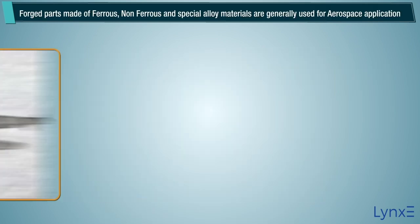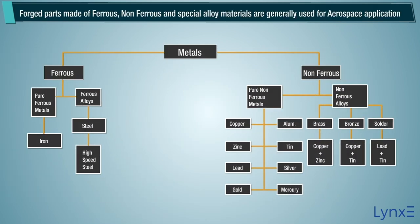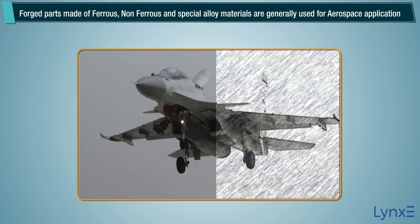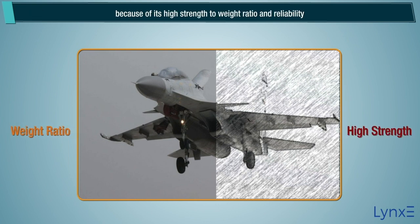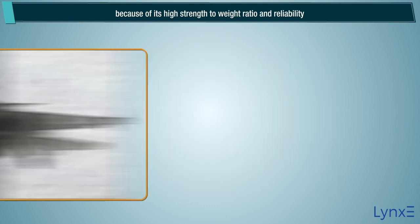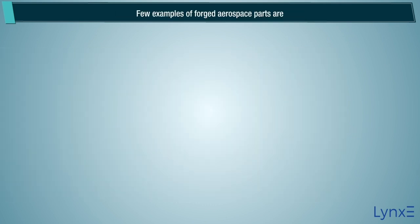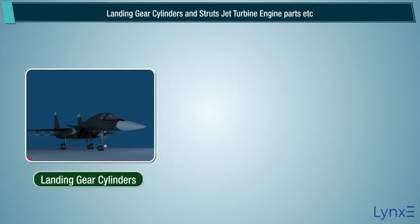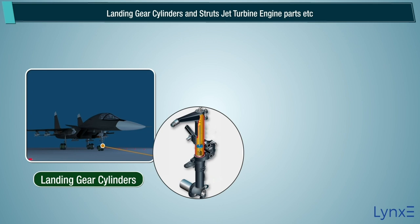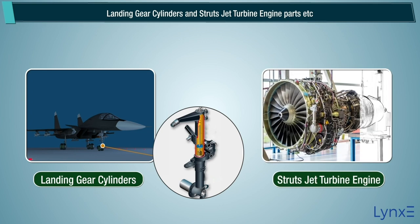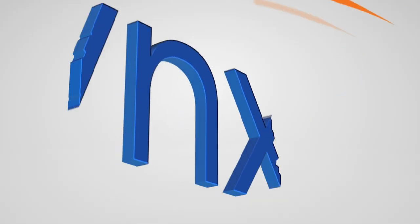Forged parts made of ferrous, non-ferrous, and special alloy materials are generally used for aerospace applications because of their high strength-to-weight ratio and reliability. Some examples of such parts are landing gear cylinders and struts, and jet turbine engine parts.